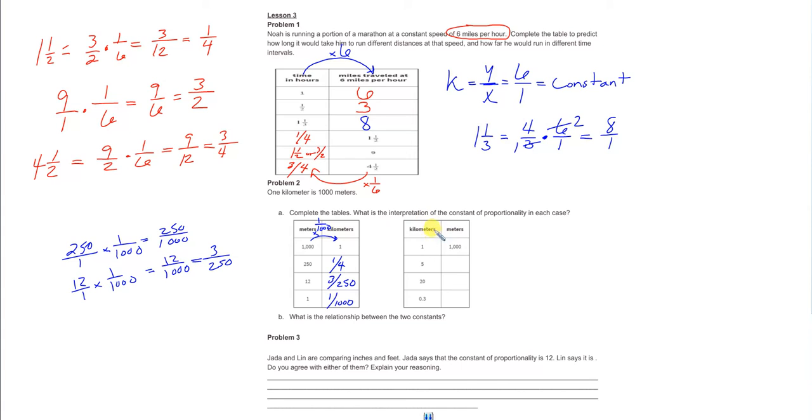Now, you'll notice that the big thing that they changed over here on this right table is kilometers and meters have just switched places. And that just means that your constant of proportionality is going to flip into its reciprocal. So instead of multiplying by a thousandth, we're just going to multiply by a thousand. And that's a lot easier math to do. Five times a thousand is 5,000.